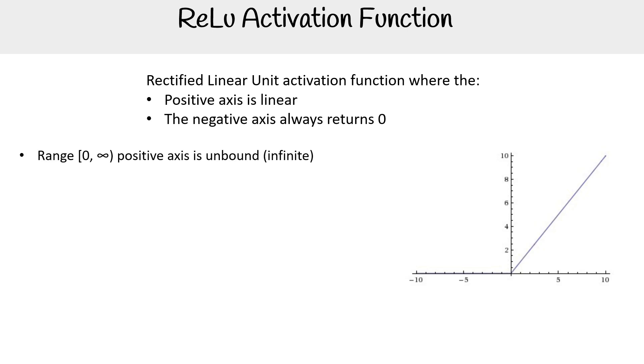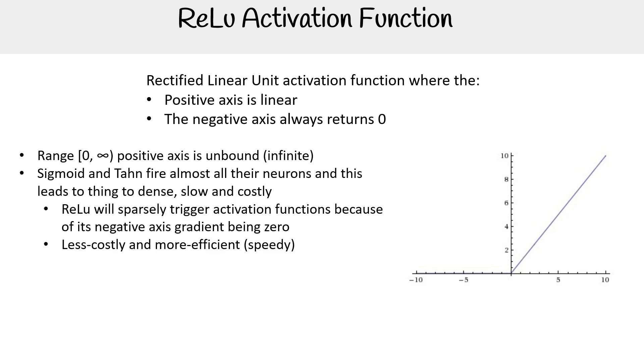So here, the range is zero to infinite, so we have a positive axis that is unbound. With sigmoid and tanh, it fires almost all the neurons, and this leads to things being dense.